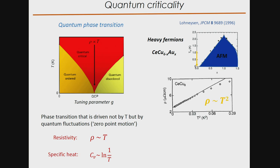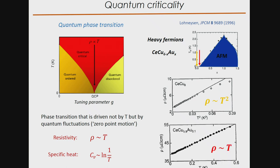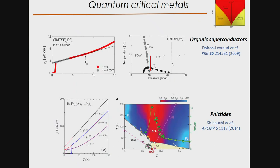Without any substitution, CeCu₆ shows a beautiful T-square resistivity down to very low temperature. But as soon as you put 10 percent gold in, you see the emergence of antiferromagnetic order, and in this case if you measure the resistivity down to very low temperature, you see that the resistivity remains linear down to something like 10 millikelvin. As pointed out by Nigel, this has now been seen in many other systems.